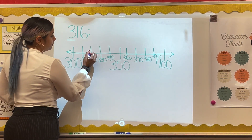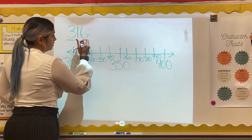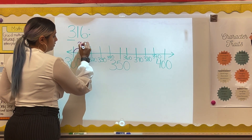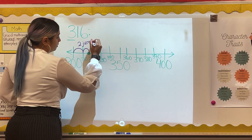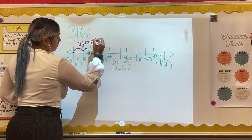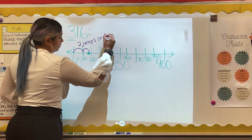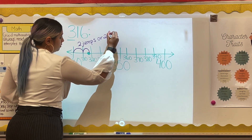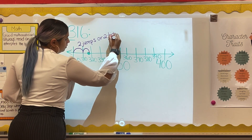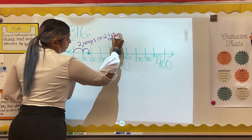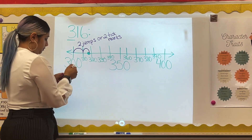Finally, I will count the number of tick marks between 316 and each multiple of 100 on the number line. The fewer the tick marks, the closer the number is to that interval. Because rounding is finding the interval closest to that number, we round to the multiple of 100 closest to that number when rounding to the nearest 100.